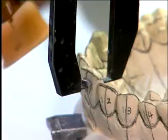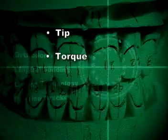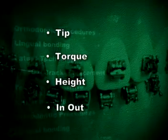The laboratory then positions the brackets on the malocluded model using the diagnostic setup as the prescription for tip, torque, height and in-out.